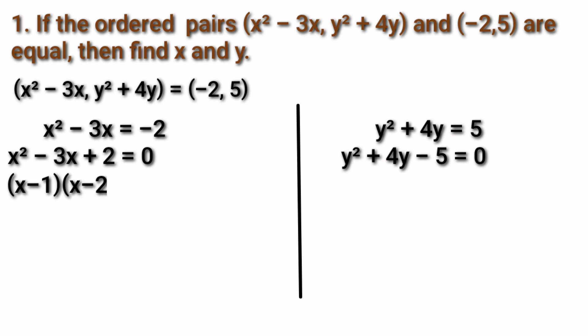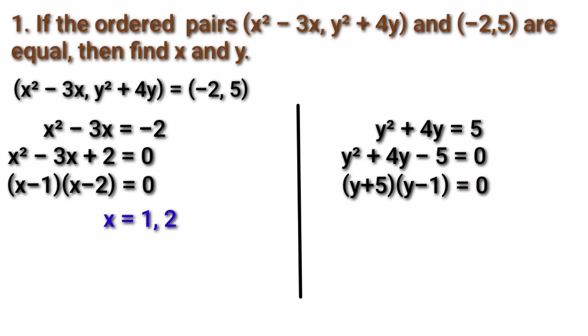Factorizing x² - 3x + 2 = 0 gives (x - 1)(x - 2) = 0, so x = 1 or x = 2. Similarly, factorizing y² + 4y - 5 = 0 gives y = 1 or y = -5.